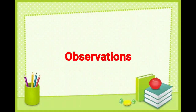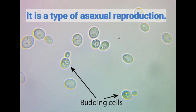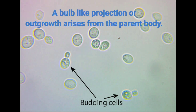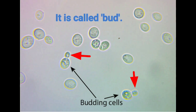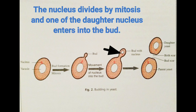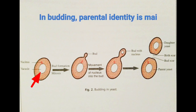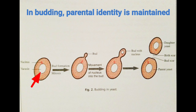Observations: Budding is a type of asexual reproduction. A bulb-like projection or outgrowth arises from the parent body — it is called a bud. The nucleus divides by mitosis and one of the daughter nuclei enters into the bud. The bud is finally detached from the parent cell. In budding, the parental identity is maintained.